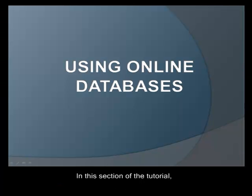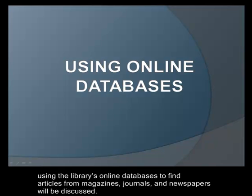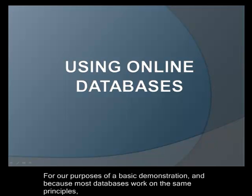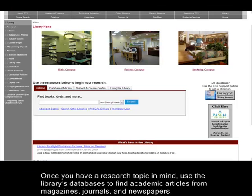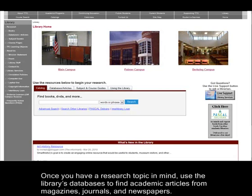In this section of the tutorial, using the library's online databases to find articles from magazines, journals, and newspapers will be discussed. For the purposes of a basic demonstration, and because most databases work on the same principles, only two of our general databases will be discussed. Once you have a research topic in mind, use the library's databases to find academic articles from magazines, journals, and newspapers.